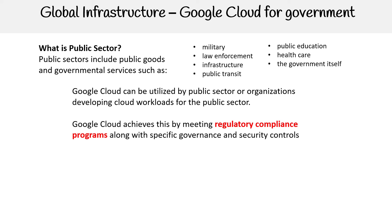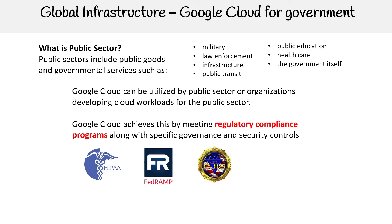Some compliance programs used in the public sector would be HIPAA for health, FedRAMP for dealing with the US, the Criminal Justice Information Service, which is like working with the FBI, and FIPS 140-2. We do cover all of these again in the course, so don't worry about having to memorize them right now.